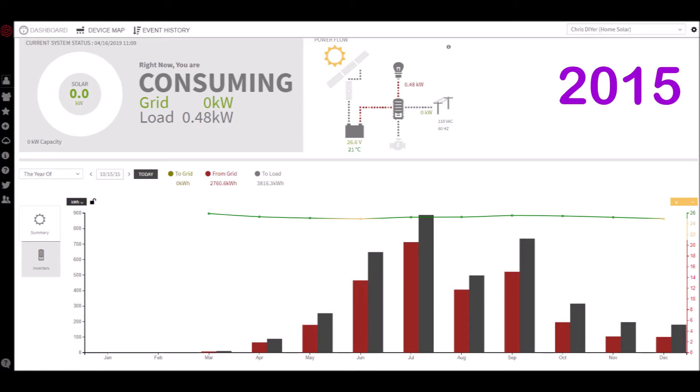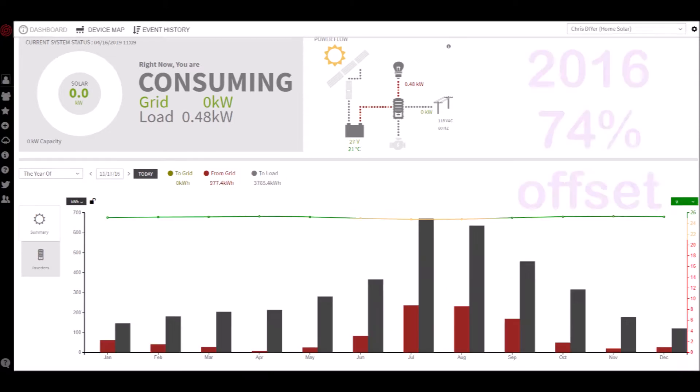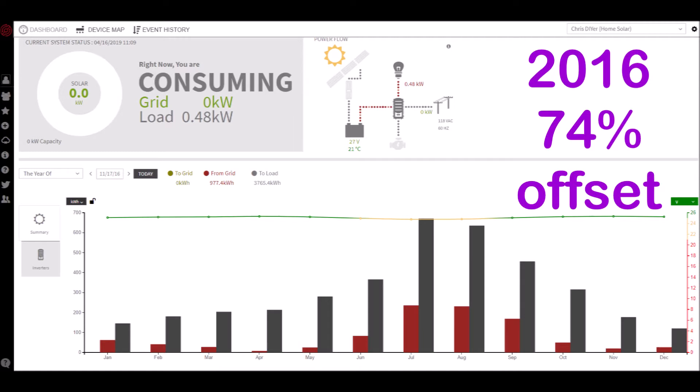So I got this system in 2015. Outback Power started collecting data. 2016 right here was essentially my best year. Didn't use much grid power at all. See?